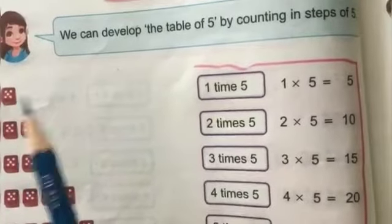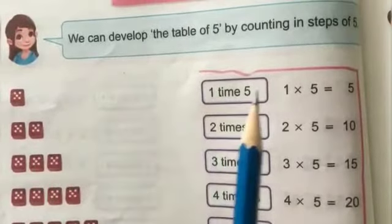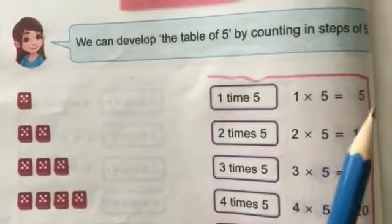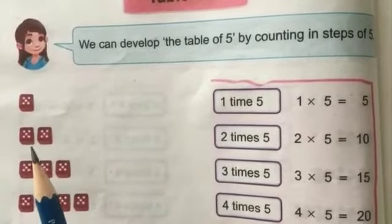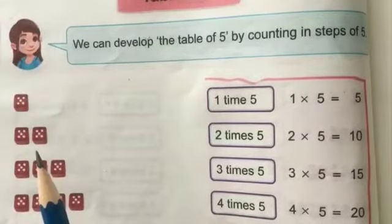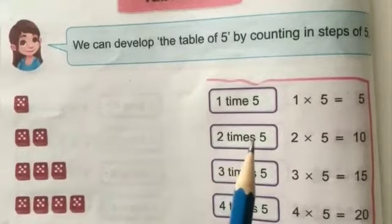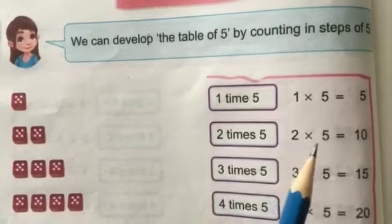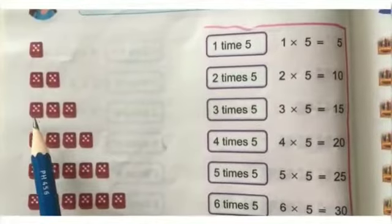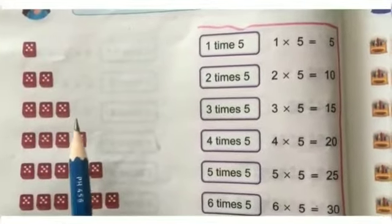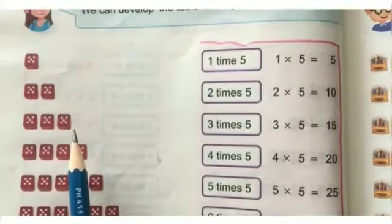First, we have one dice with five dots, so we can read it as one times five, write it as one multiply by five, and it is equal to five. Next, when we add one more dice it becomes two dices of five dots. We can read it as two times five, write it as two multiply by five, and it is equal to ten.